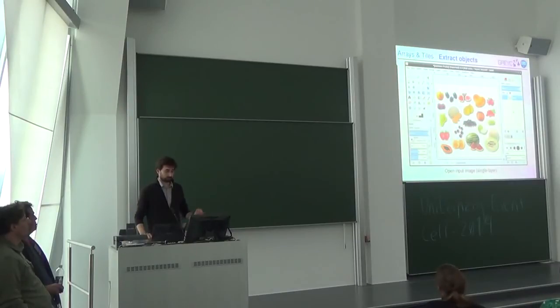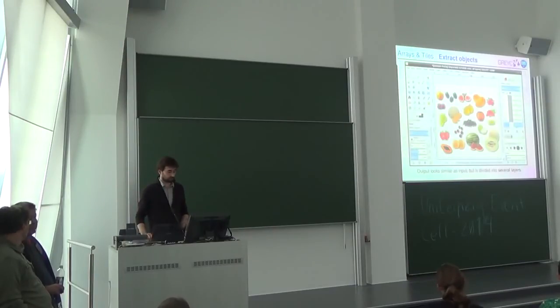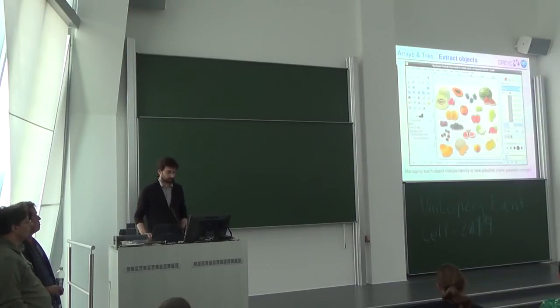We have a white background, some objects on it. We use an interface to locate the background. We can visually adapt the parameter to get the object we want. Then we have the results. So, it looks the same, but each object is now in a different layer. And then, we can change independently all the position of the object.